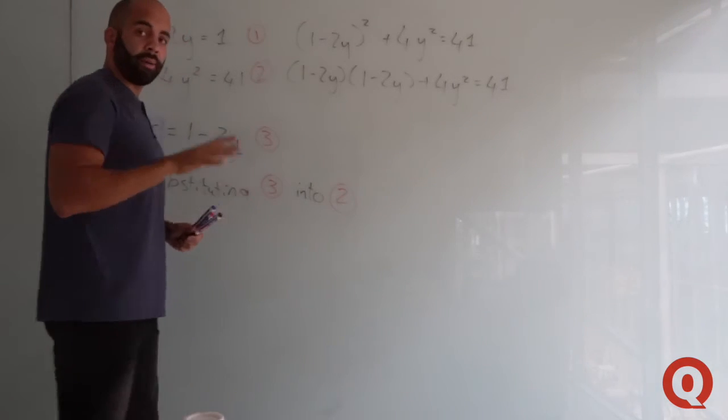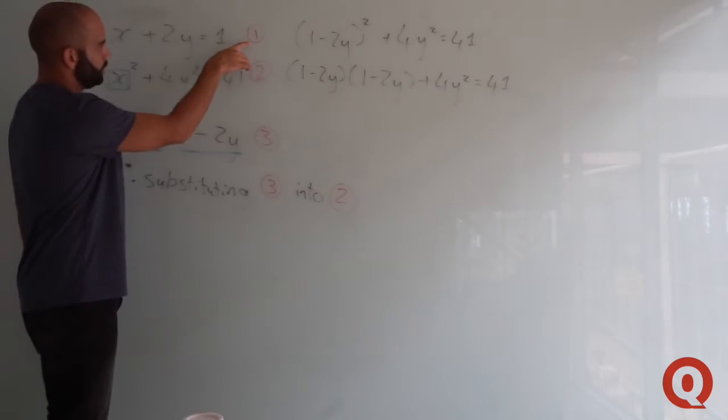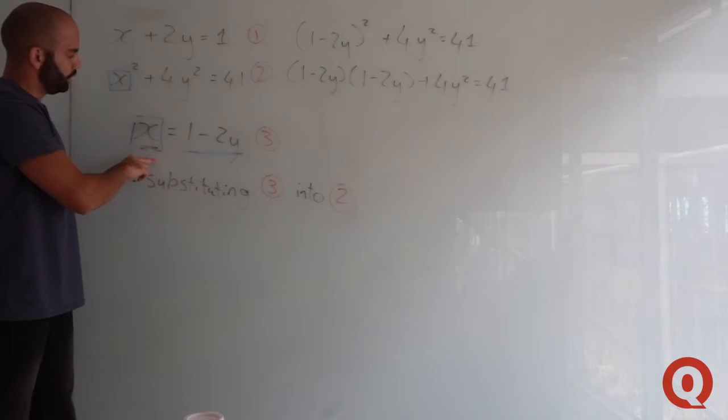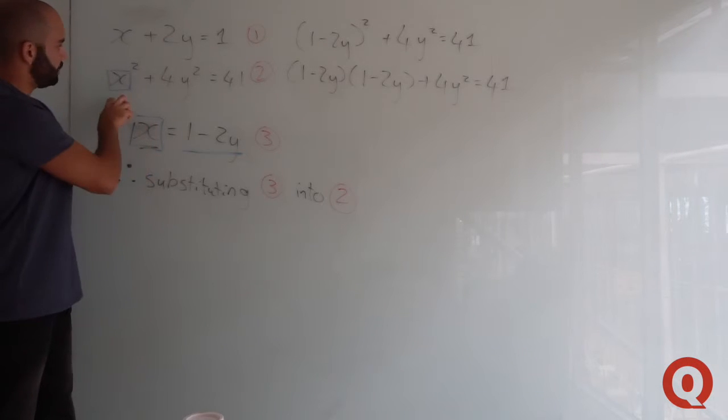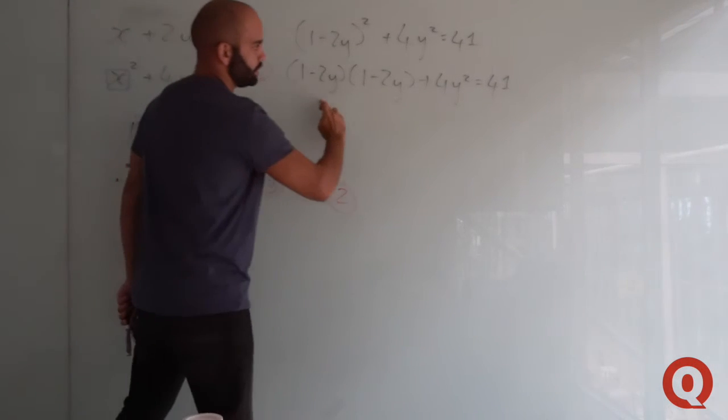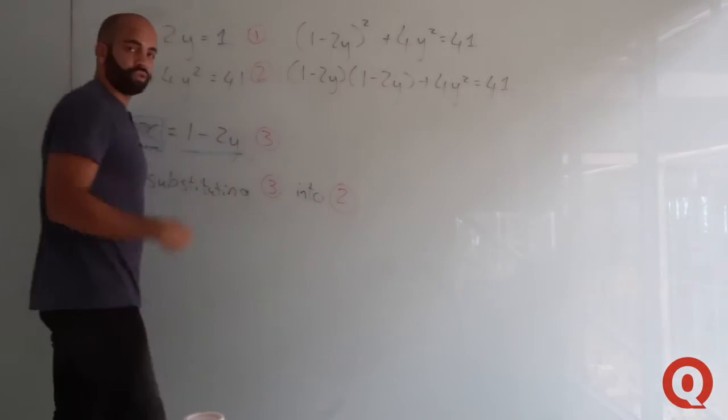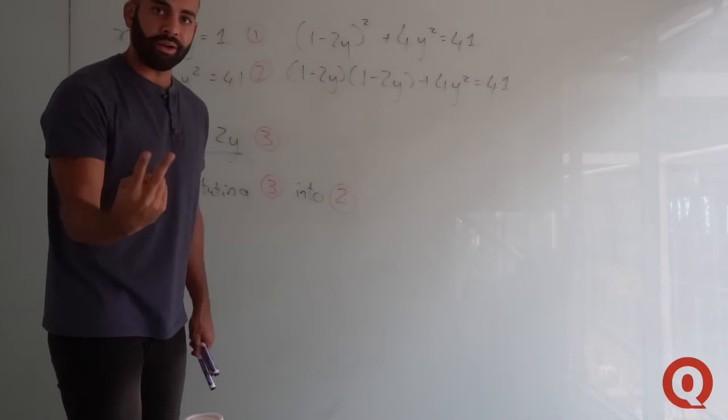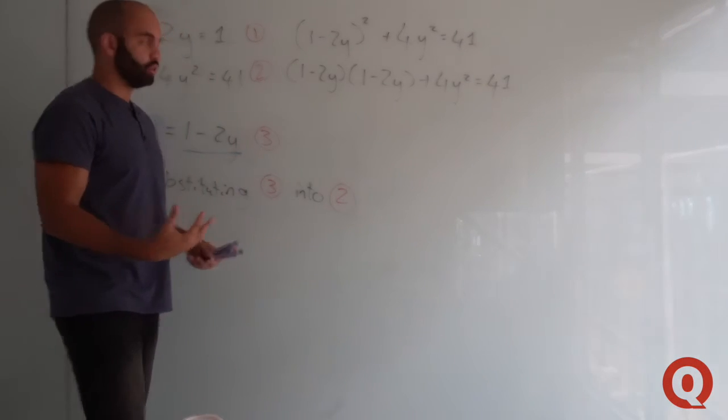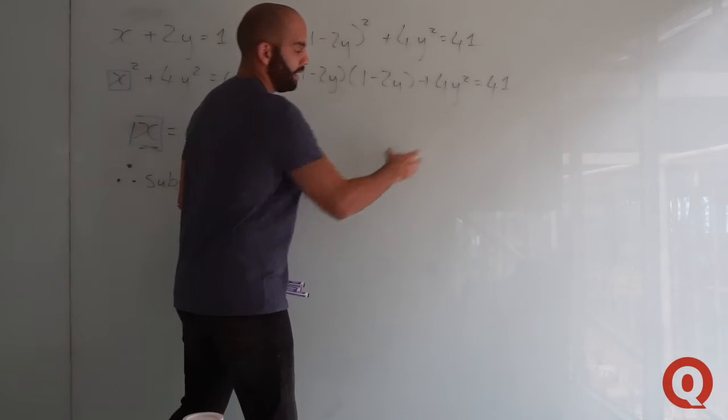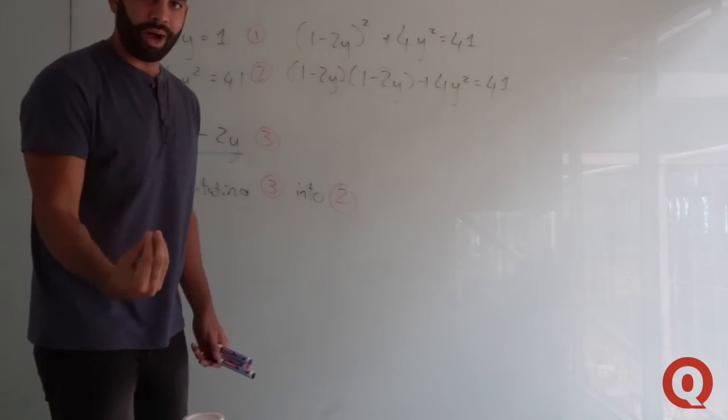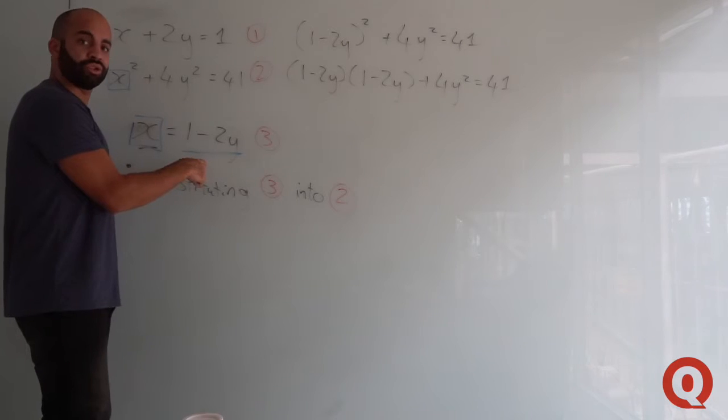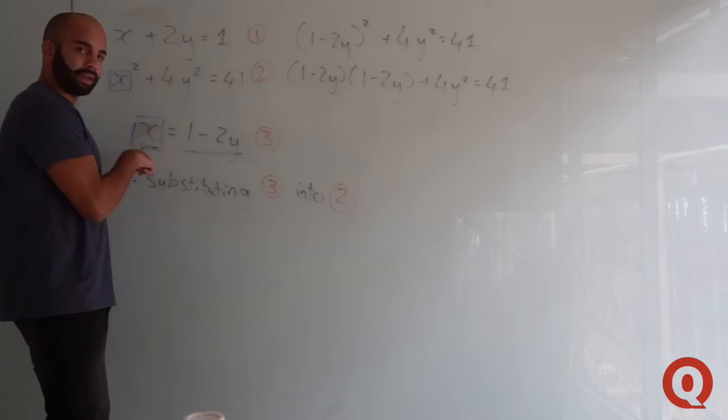By manipulating equation one so that x is the subject, we've eliminated any x's in this expression. You've got one equation and one unknown, which means you can now solve for y and find the direct values for y, then substitute back into equation three to get x.